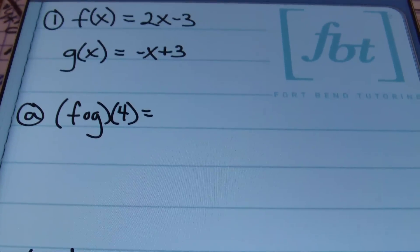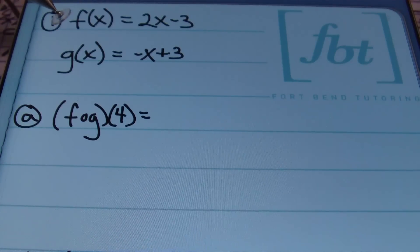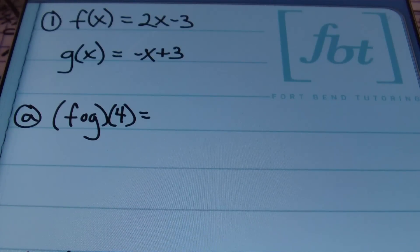In our first example, we're given two functions, F and G. Anytime you see F of X or G of X, it simply means the variable Y. However, they use function notation so they can label and name the equation, so you'll know which one they're referring to. The first one is named F of X and equals 2X minus 3, whereas the G function is equivalent to negative X plus 3.